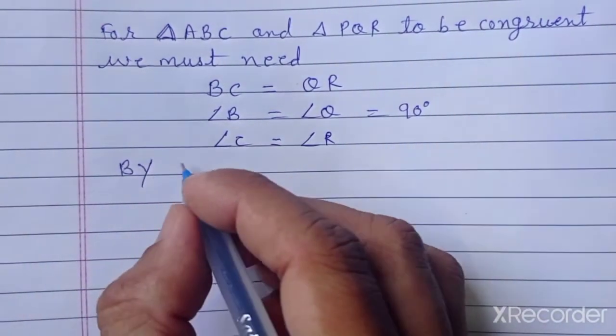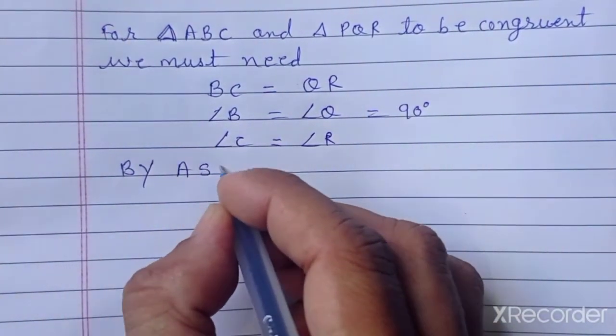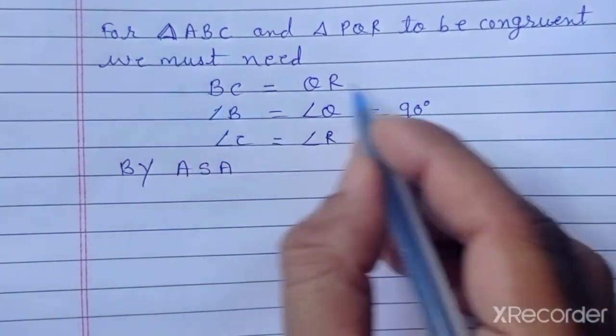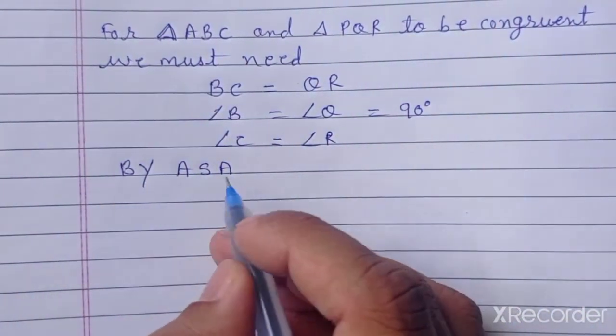Here, which condition is applied? This angle, side, and angle. If you have side, this angle and this angle, it is angle side angle.